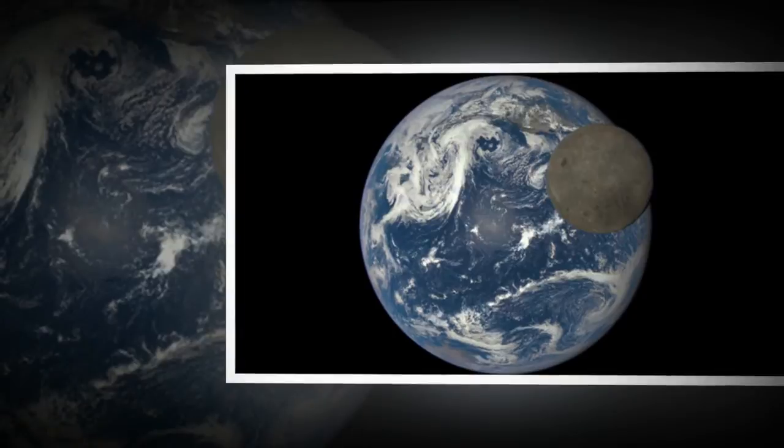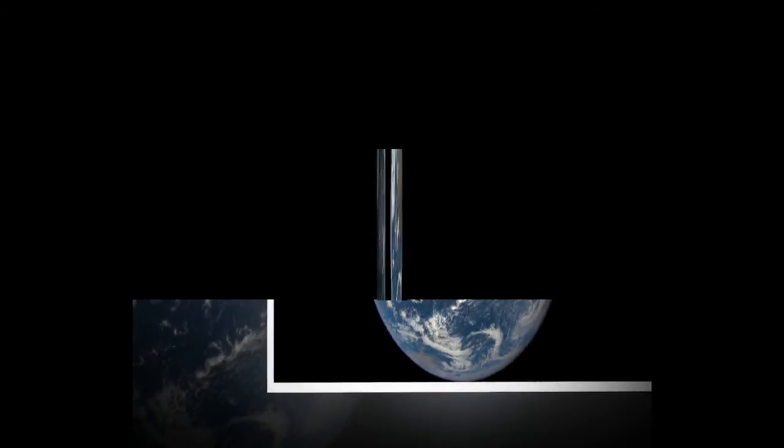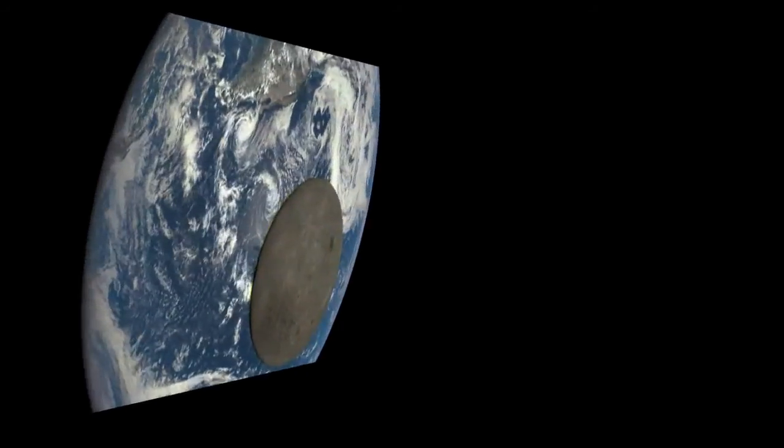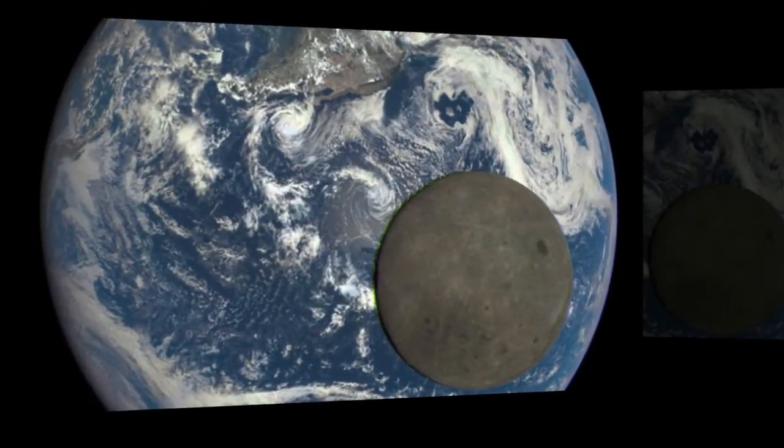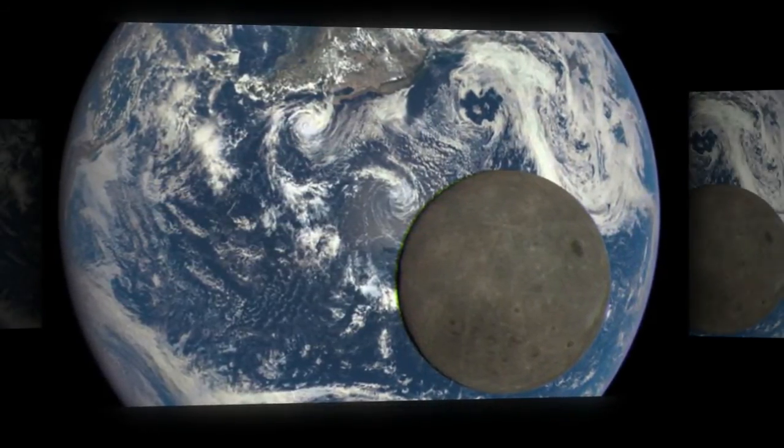The far side of the Moon was not seen until 1959 when the Soviet Luna 3 spacecraft returned the first images. Since then, several NASA missions have imaged the lunar far side in great detail.